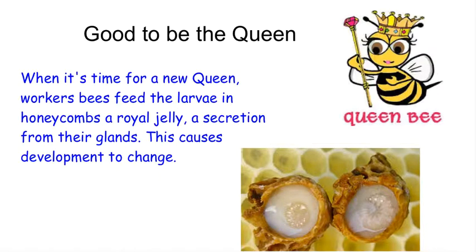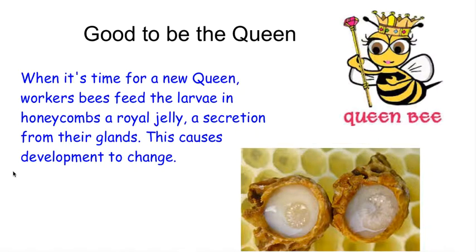So how do you get a new queen? The bees make honeycomb and lay their larva inside. Every now and then the workers decide they need a new queen, so they go over these honeycombs and release a secretion from their glands. This is called royal jelly. This causes the eggs to develop differently — they become much bigger — and that's how you get a new queen.